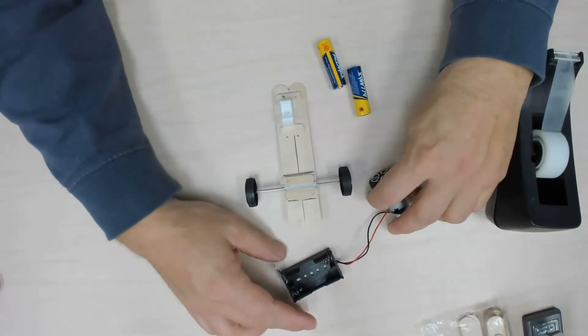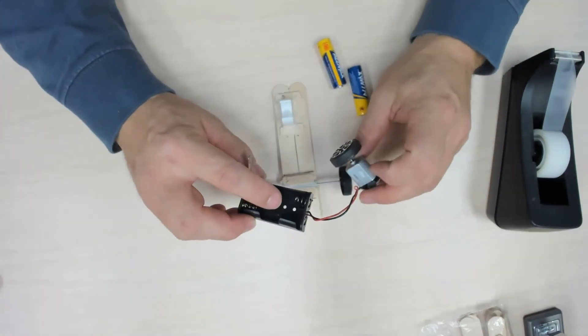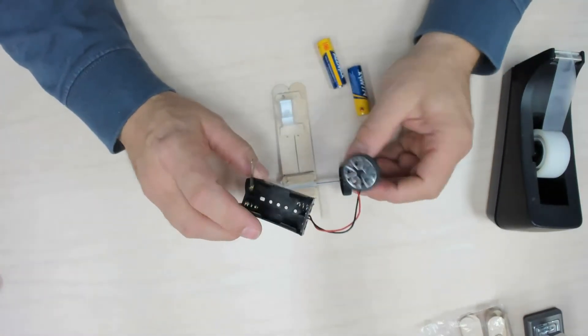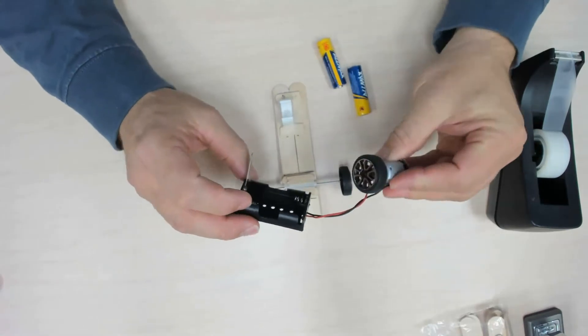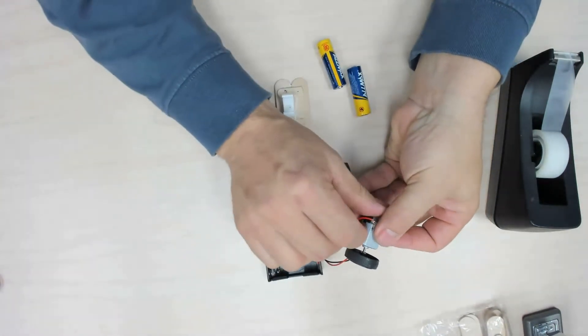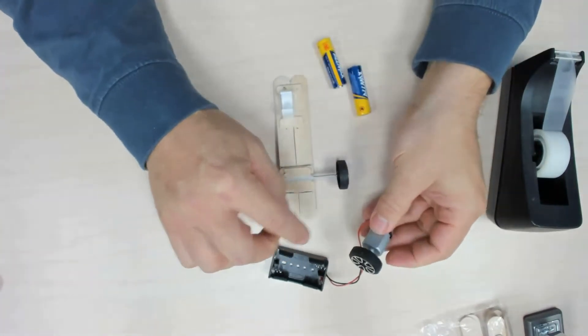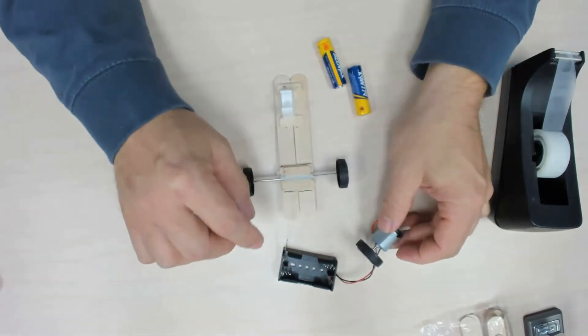Again, remember, you shouldn't store your battery connector with the batteries in there. And we want to make sure that the connections on our motor stay solid. So we put a little piece of tape there.